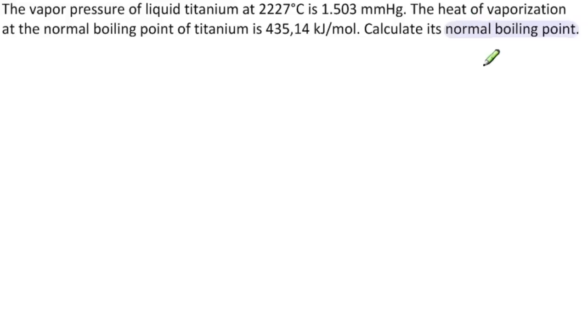Normal means at one atmosphere. So we're going to consider normal to be our level one. So for level one information, we have P1 is equal to one atmosphere. And T1 is what we are looking for, the normal boiling point.